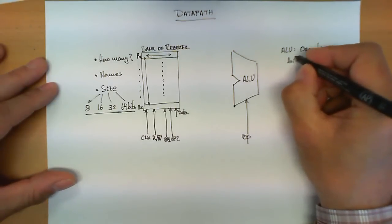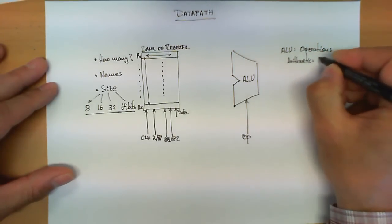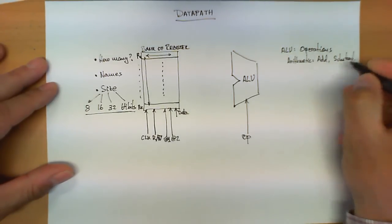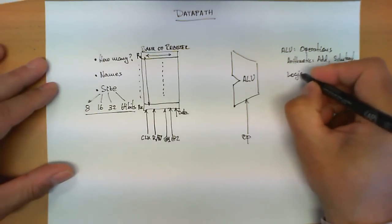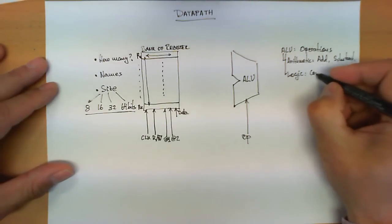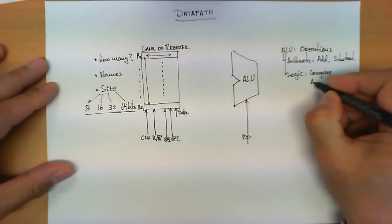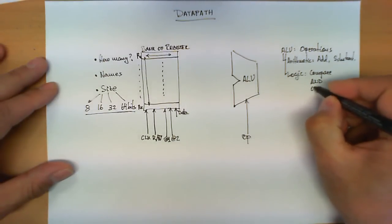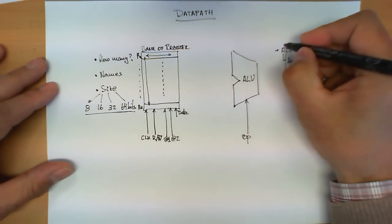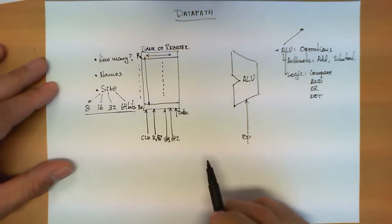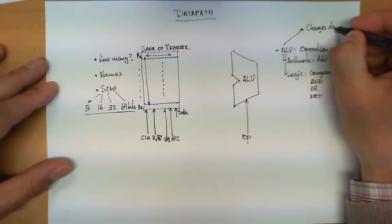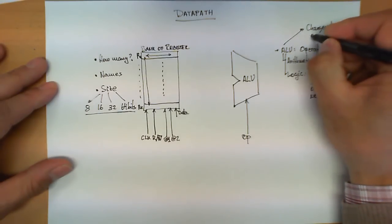Typical operations are in the Arithmetic category: Addition and Subtraction. And in the Logic category — this is the reason why we call it ALU — we also have very important operations like compare, an AND or conjunction, an OR or disjunction, and a negation. As with the size, names, and number of registers, this also changes depending on the processor.